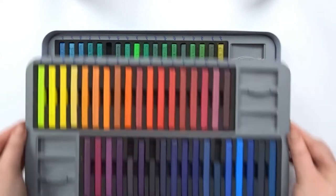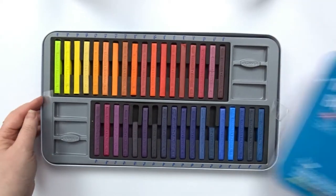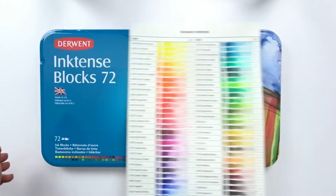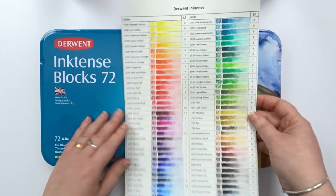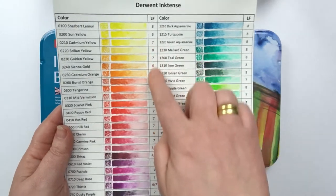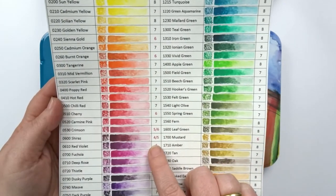As you can see it's a big tin that holds two layers of blocks. The first thing I did was of course make a color chart and as you can see I also wrote down how lightfast the colors are.